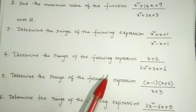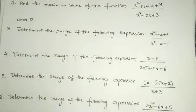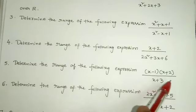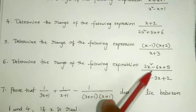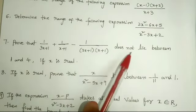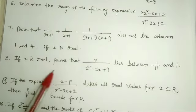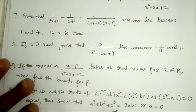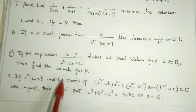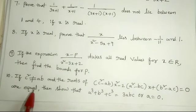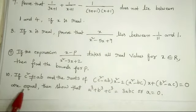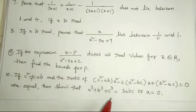Next one: determine the range of x squared plus x plus 1 by x squared minus x plus 1. Next: determine the range of x plus 2 by 2x squared plus 3x plus 6. Next: determine the range of x minus 1 times x plus 2 by x plus 3. Next: determine the range of 2x squared minus 6x plus 5 by x squared minus 3x plus 2. Next: prove that 1 by 3x plus 1 plus 1 by x plus 1 minus 1 by 3x plus 1 times x plus 1 doesn't lie between 1 and 4 if x is real. Next: if x is real, prove that x by x squared minus 5x plus 9 lies between minus 1 by 11 and 1. Next: if the expression x minus p by x squared minus 3x plus 2 takes all real values for x in R, then find the bounds for p. Last question: if c squared is not equal to ab and the roots of c squared minus ab times x squared minus 2 times a squared minus bc times x plus b squared minus ac equals 0 are equal, then show that a cubed plus b cubed plus c cubed equals 3abc or a equals 0.